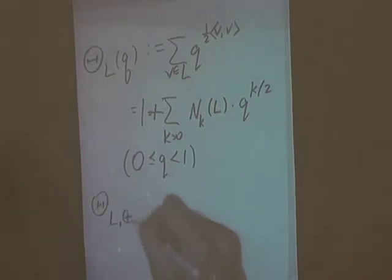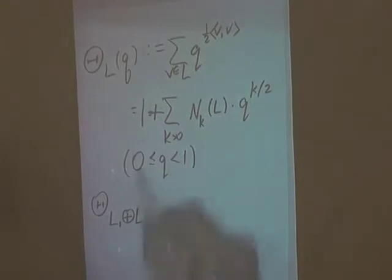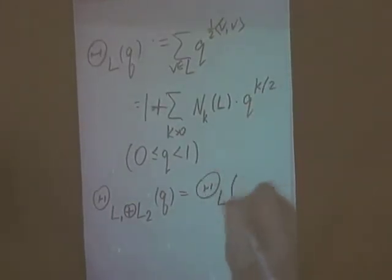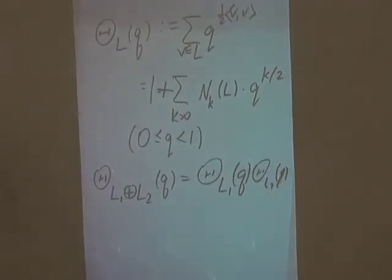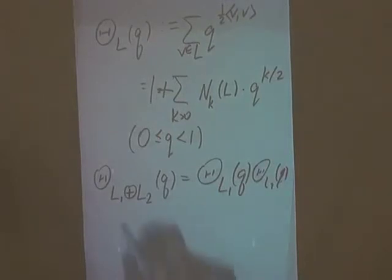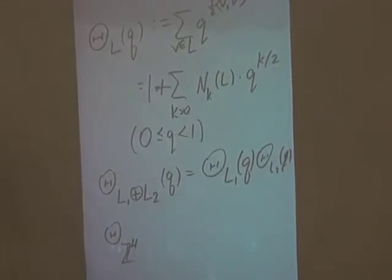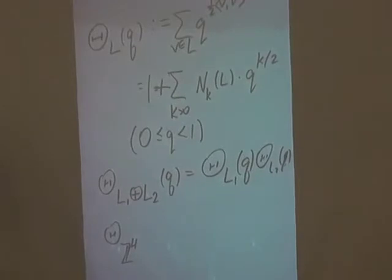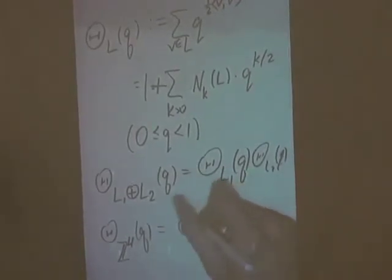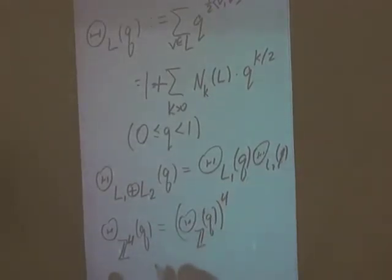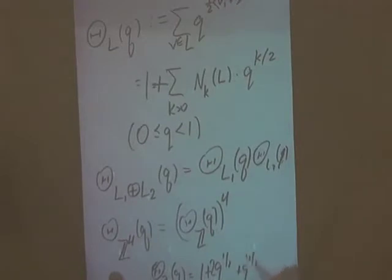This generating function has some nice properties. Most nicely, if you take the direct sum of two lattices, just as was true for some of the other invariants we heard about earlier, the theta functions multiply. So for instance, if you are trying to count representations of numbers as sums of four squares, you are asking for the theta function of the lattice ℤ⁴, which equals the theta function of ℤ to the power 4. The theta function of ℤ is the familiar power series 1 + q^(1/2) + q^(4/2) + q^(9/2) + ⋯, all raised to the power 4.